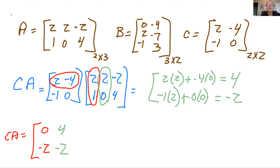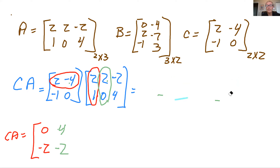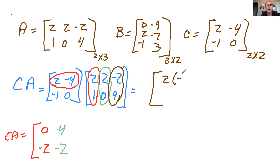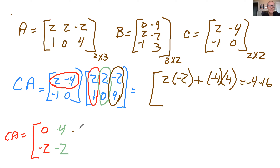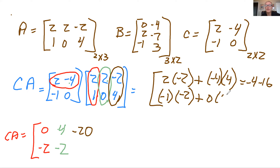For the last column: column three of the second matrix times row one of the first: 2×(-2) + (-4)×4 = -4 - 16 = -20. And the last entry, column three times row two: (-1)×(-2) + 0×4 = +2. Tedious, but that is the strategy for matrix multiplication when you do these calculations.